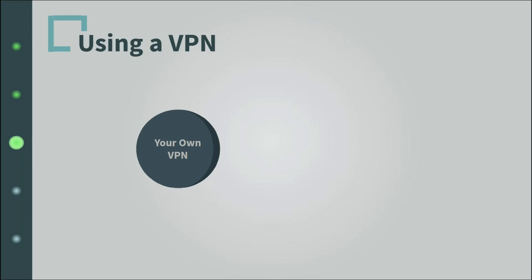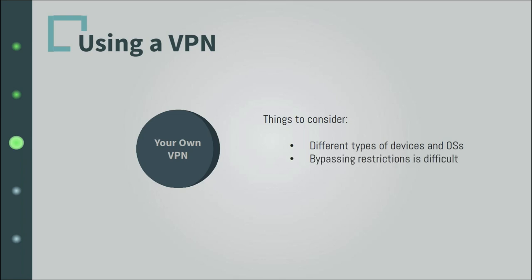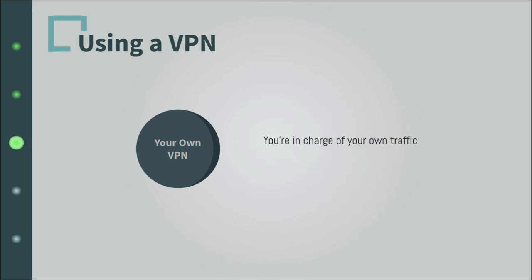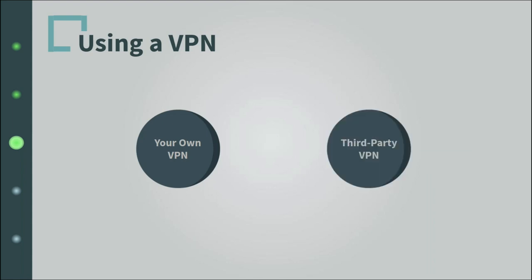Should you want to set up your own VPN server, keep in mind that you need to consider different types of devices and operating systems. Also, you will not be able to bypass censorship and restrictions around the globe if you use your own VPN server, and the security aspect might not be as strong and reliable as third-party solutions. However, using your own VPN means you're in charge of your own traffic and can access your home or office remotely without the need for a middleman. It's a trade-off and you must choose what's best for you.